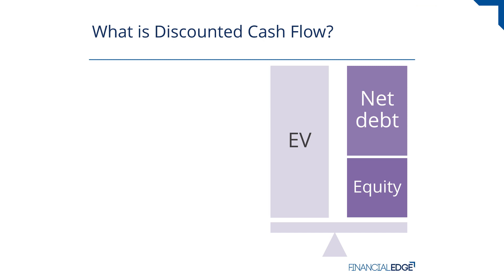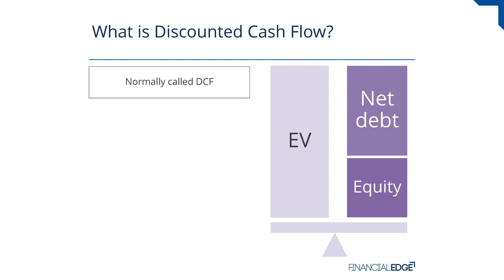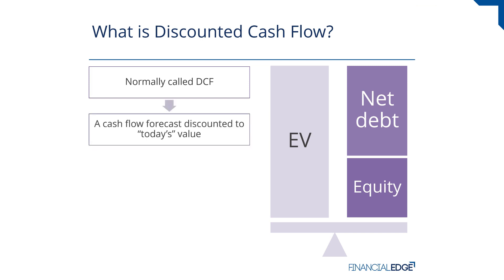We could use multiples, such as trading comps, or we could use a discounted cash flow — a DCF. The enterprise value represents the net operating assets of a business, and by doing a discounted cash flow we will work out the value of that enterprise value — those net operating assets. It's normally called a DCF and it takes a cash flow forecast and discounts that to today's value.